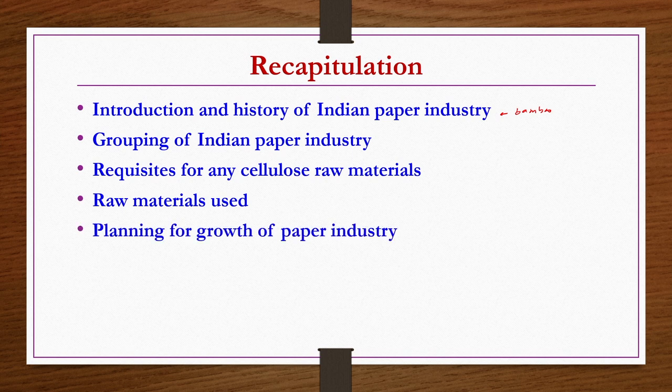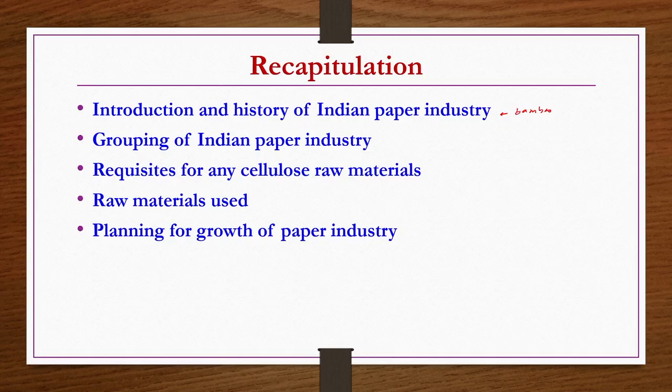For planning the growth of the paper industry, we understand the supply-demand gap is very high, so certain planning is required. The most important steps include increasing bamboo cultivation as per demand, exploring alternatives like eucalyptus and reuse of waste paper. Having indigenous equipment and continuous process production at higher throughput are essential to ensure sustained growth of the paper industry.